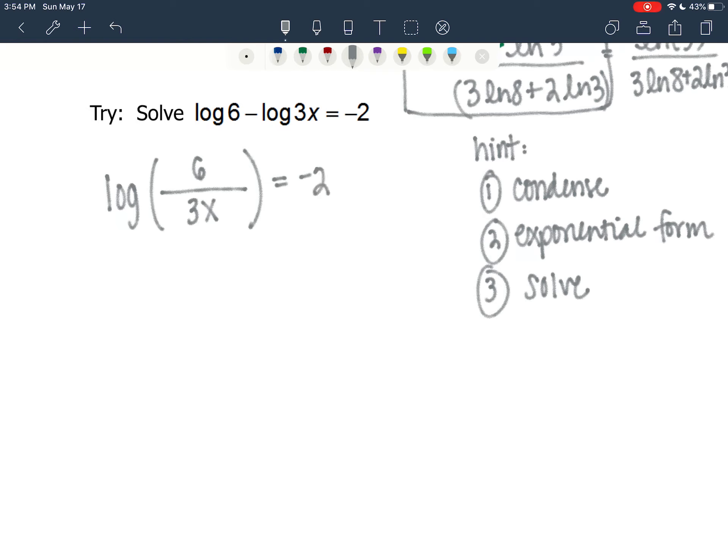This is a base 10, so I will have 10 raised to the negative 2 power equals 6 over 3x.